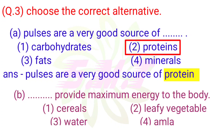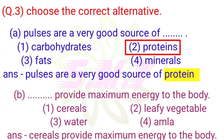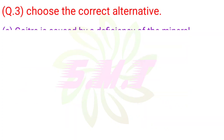B. Which provides maximum energy to the body? 1. Cereals, 2. Leafy vegetables, 3. Water, 4. Amla. Answer: Cereals provide maximum energy to the body.